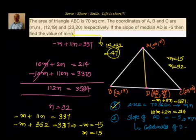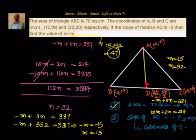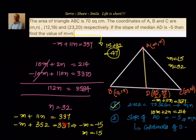The solution for this problem: M plus N equals 47. To summarize: we used one condition from the area of the triangle, and another from the slope of the median. First, use area to get a condition in M and N. Second, find coordinates of D using midpoint formula on BC, then equate slope of AD to minus 5 and simplify to get a second condition. Solve the two linear equations by elimination to get M and N, then add them. M plus N equals 47. Thanks for your support — bye for now!